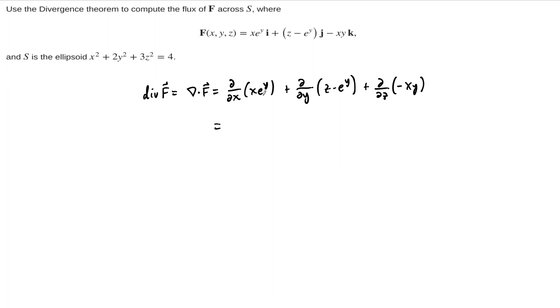And when we work this out, we see the x-derivative here is e to the y plus the y-derivative here is minus e to the y, and the z-derivative of this last component is zero. And so the divergence of this vector field is zero.